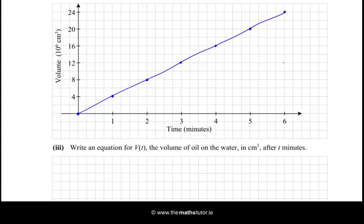Next we have to write an equation for V(t), the volume of oil in the water in cm³ after t minutes. So V(t) is a function of t and it's basically 4 times t — whatever t is, you just multiply it by 4 to get the volume.